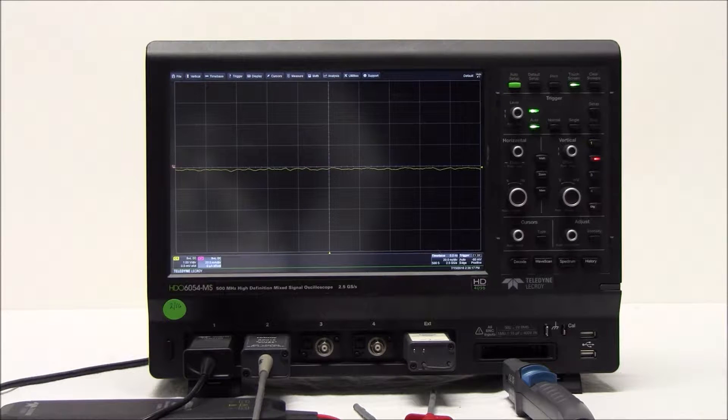Today we are using an HDO6000 oscilloscope, but this answer applies to all of our Maui Xtreme oscilloscopes with the PWR software option.